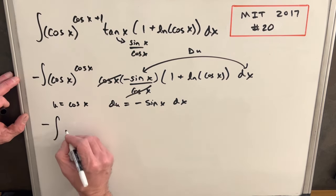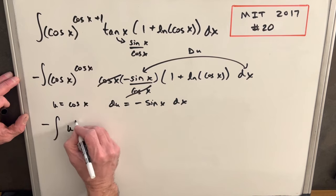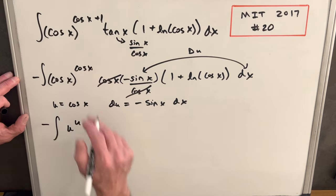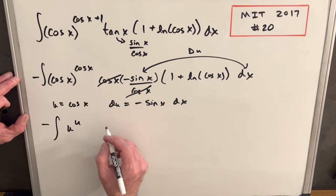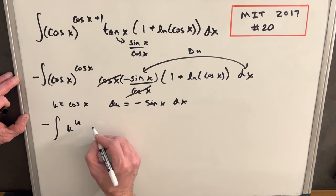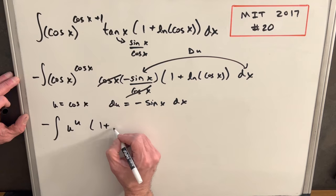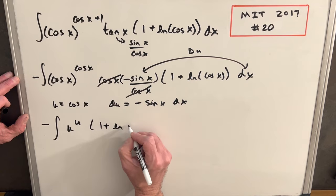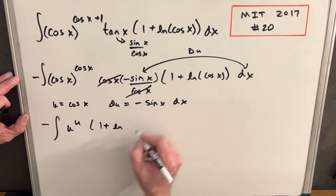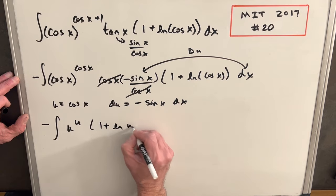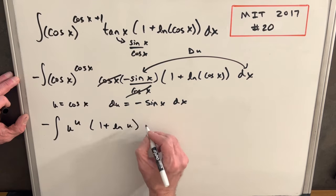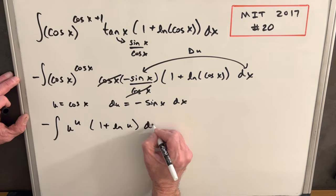Making the substitution, we're going to have minus u to the u times cosine u. Then we just have 1 plus ln — with cosine replaced by u — so we have ln u there, du.